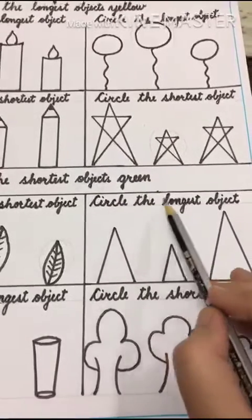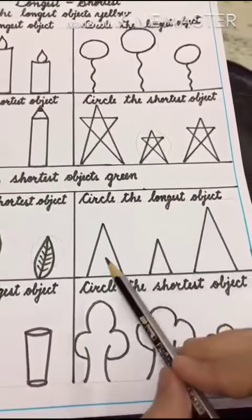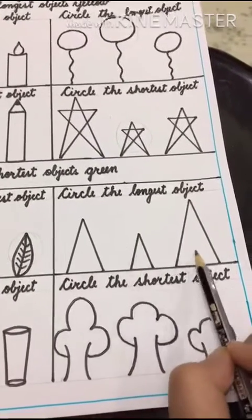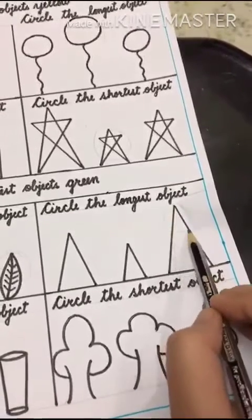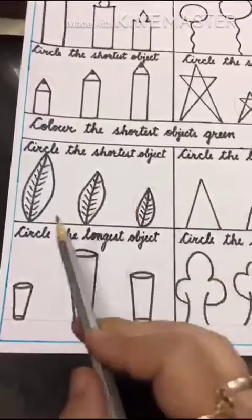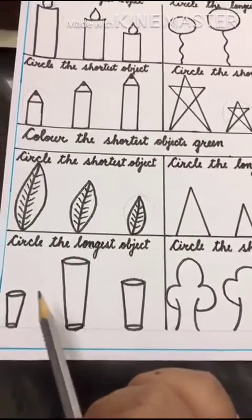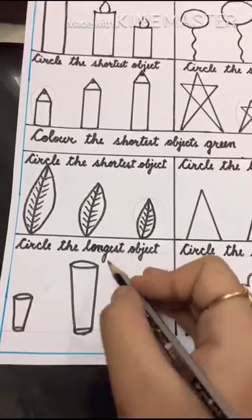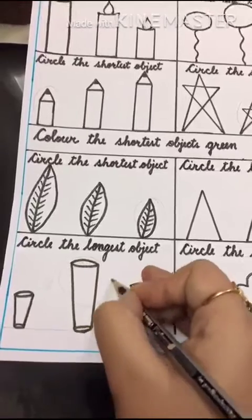Circle the longest object. Now tell me which one is longest. Yes, this one. Circle it. Circle the longest object. Which one is longest? Yes, this one. You have to circle it.